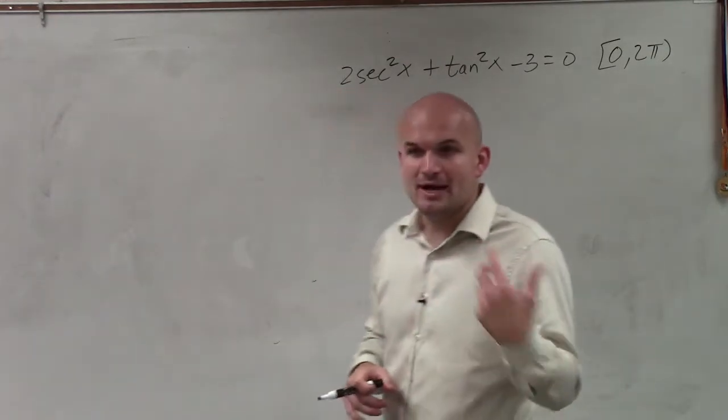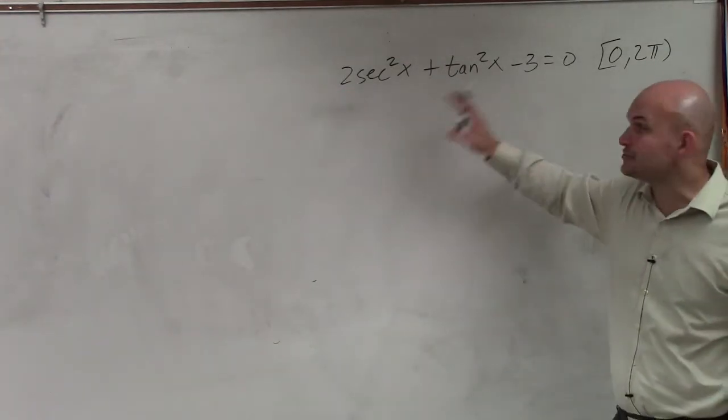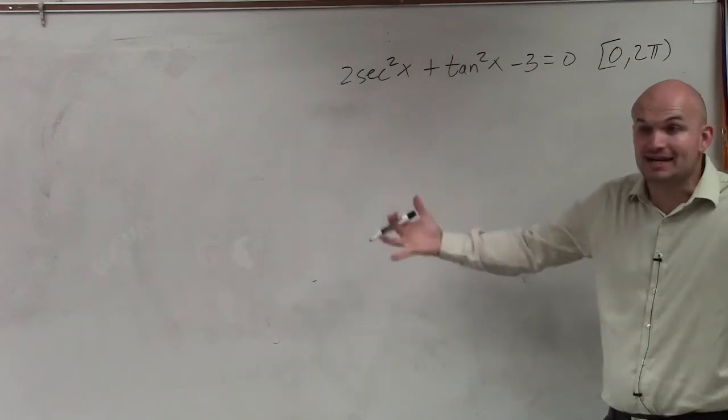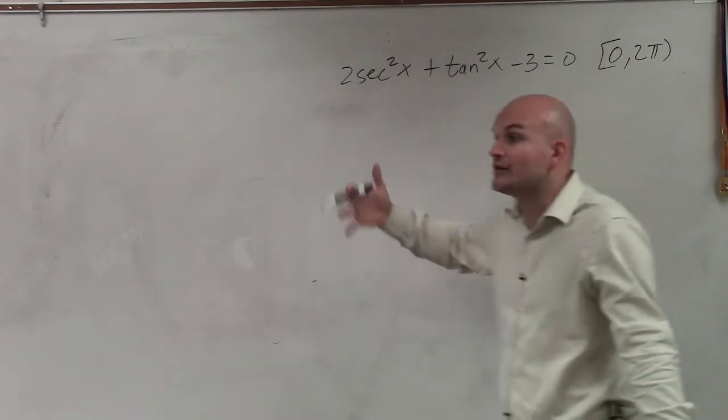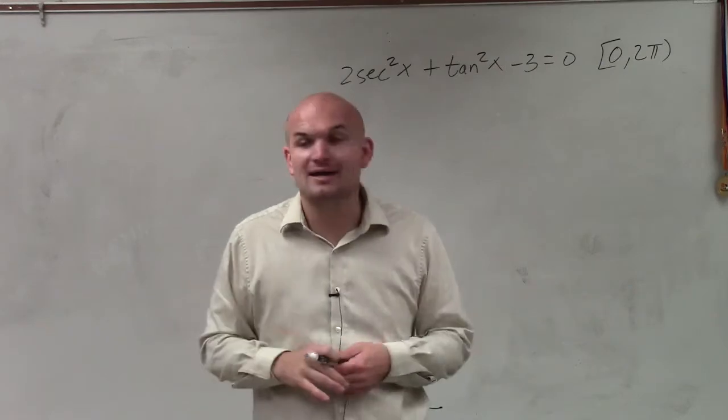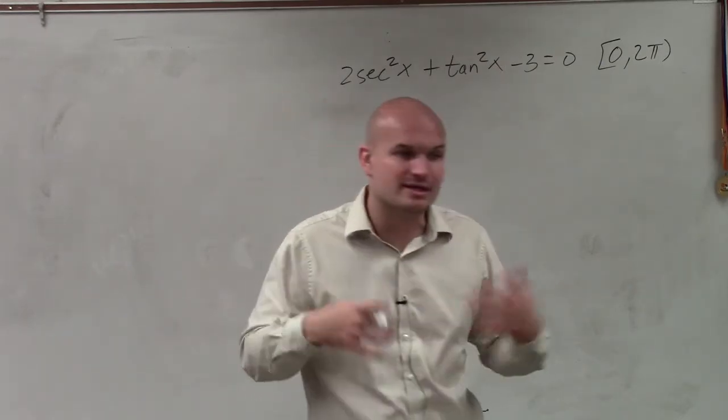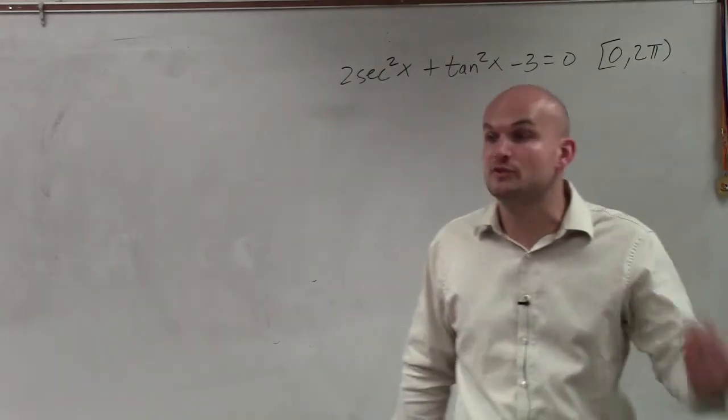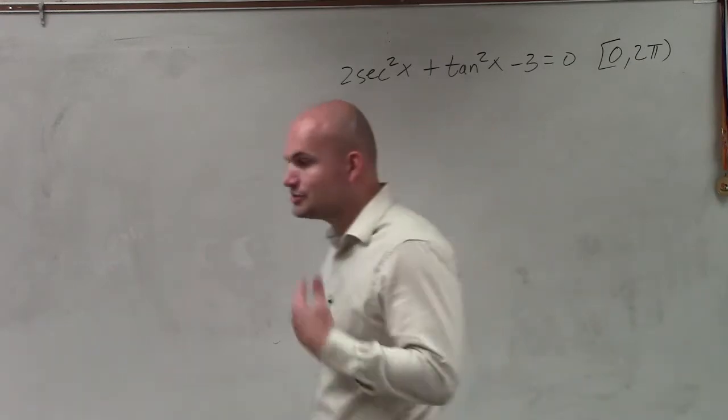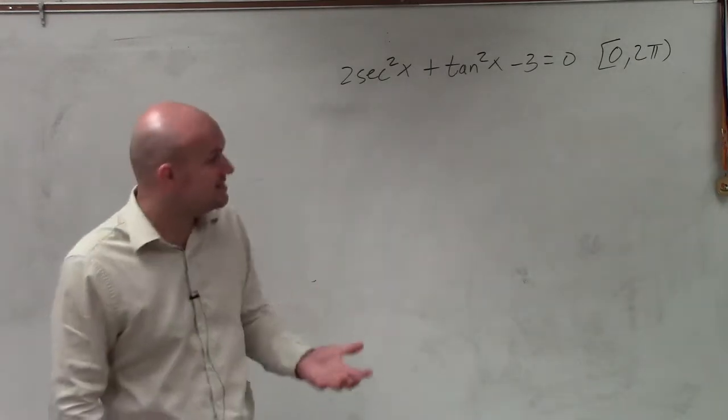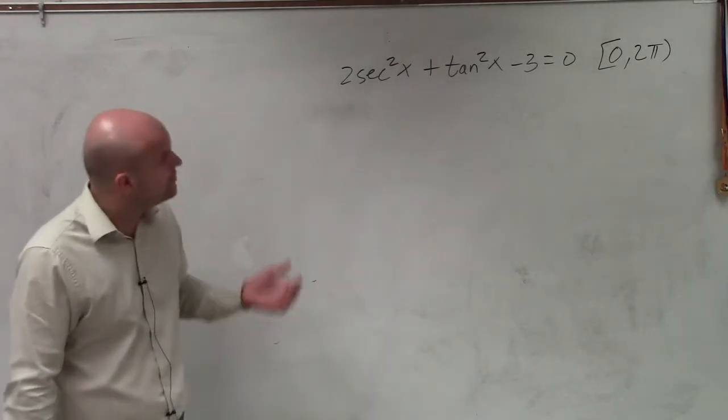So what I noticed was when I have tangent squared or anything squared, I want to identify my Pythagorean identities. And before you guys take that end of course EOC, please make sure you guys go back and review those identities, because it is not something that will be provided for you.